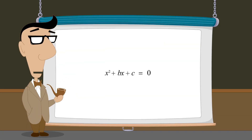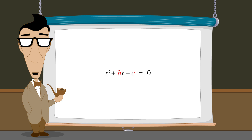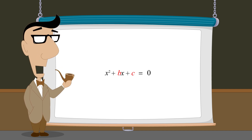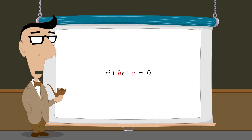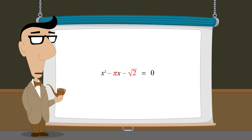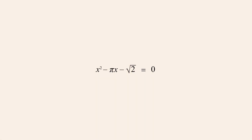In the examples of quadratic equations that we have solved so far, the constants b and c have been integers. But the completing the square method can be used to solve any quadratic equation. In our final example we will demonstrate that b and c don't have to be integers or even rational numbers, by solving the quadratic equation x-squared minus pi x minus the square root of two equals zero. In this quadratic expression the x-coefficient b is negative pi and the constant term c is the negative square root of two.